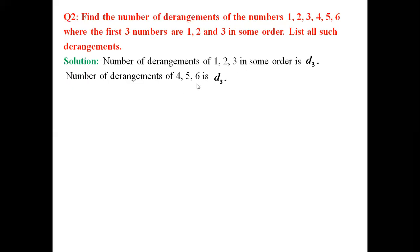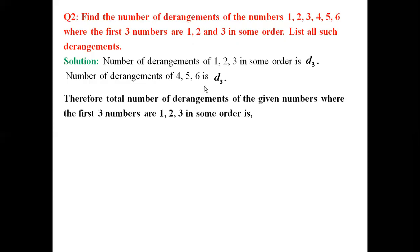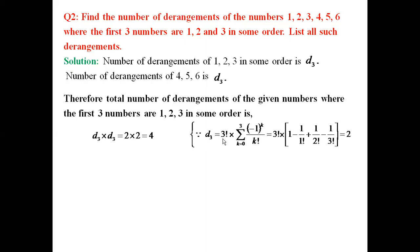Therefore, the total number of derangements where the first 3 numbers are 1, 2, 3 in some order is the product D(3) × D(3). Since D(3) = 3! × summation k=0 to 3 of (−1)^k / k! = 2, the total is 2 × 2 = 4. So there are 4 such arrangements.